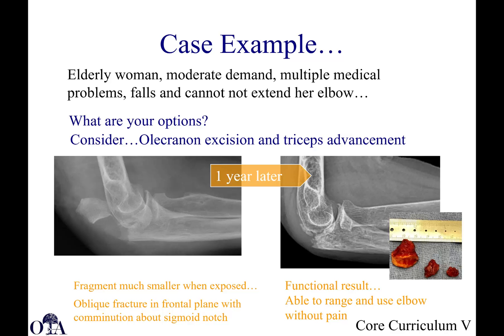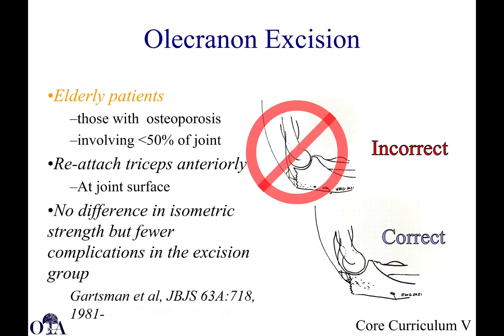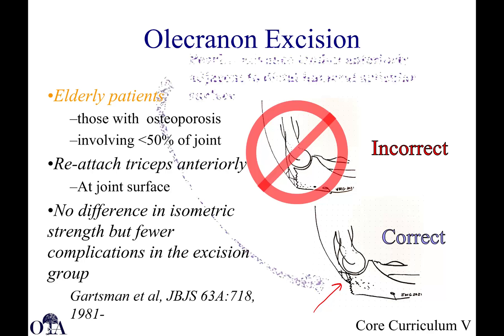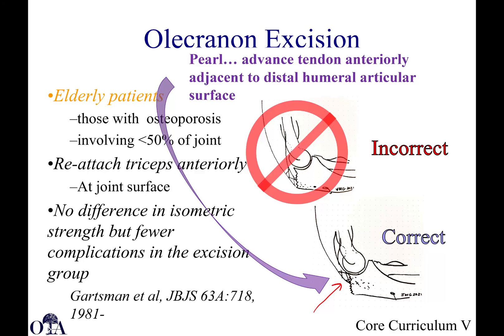With excision, you get a functional result — the patient is able to range and use the elbow and actively extend without pain. If you have an elderly patient with osteoporosis and less than 50% of the joint involved, you can reattach the triceps. Importantly, you must reattach it anteriorly, closer to the articular surface — not at its native position. The pearl is to advance that tendon anteriorly adjacent to the distal humeral articular surface.